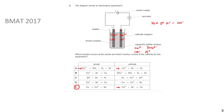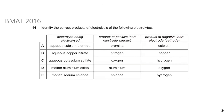Welcome back. Previously we looked at BMAT 2017 Question 2 - the reasoning at the anode was a bit awkward to explain, but through elimination we managed to cover the key details of electrolysis not covered in the first question. Now we move on to BMAT 2016: identify the correct products of electrolysis of the following electrolytes.